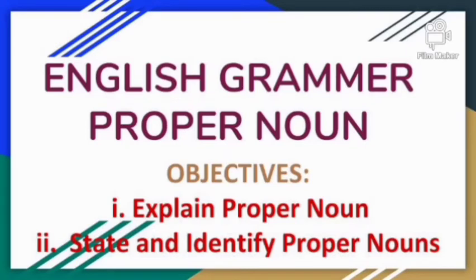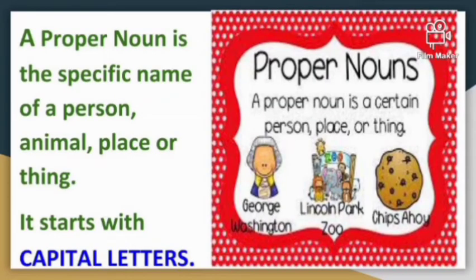Welcome to English grammar class. I'm Mr. Lyle, and this morning we're going to be talking about proper nouns. What is a proper noun? A proper noun is a specific name of a person, animal, place, or thing. It is the particular name you call something — the specific name of a person, animal, place, or thing.